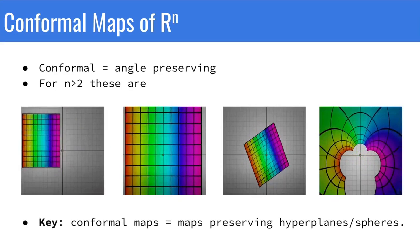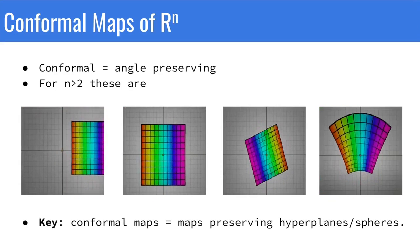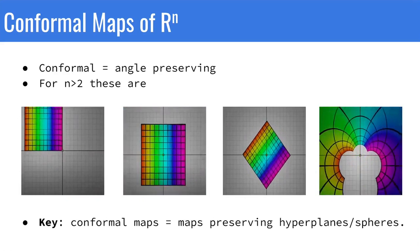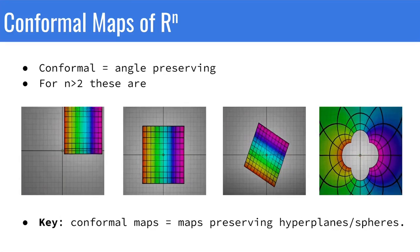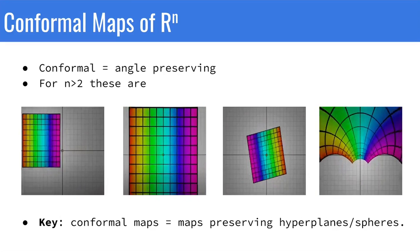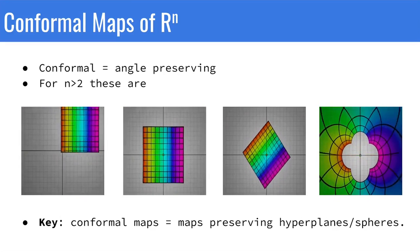A key fact is that conformal maps always send hyperspheres/hyperplanes to themselves. In fact, it's stronger than that. Conformal maps can be characterized by this property.